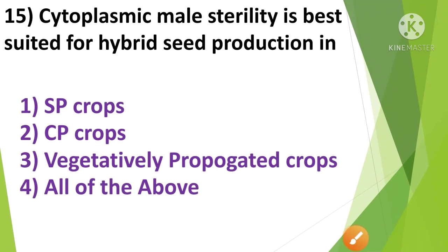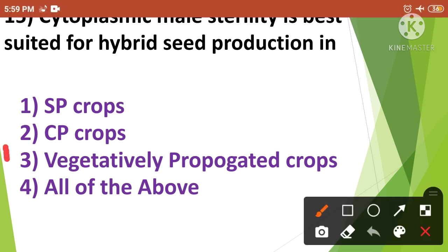Next question: Cytoplasmic male sterility is best suited for hybrid seed production in — 1st option self-pollinated crops, 2nd option cross-pollinated crops, 3rd option vegetatively propagated crops, and 4th option all of the above. The correct answer is option 3rd, vegetatively propagated crops. Cytoplasmic male sterility is best suited for hybrid seed production in vegetatively propagated crops.